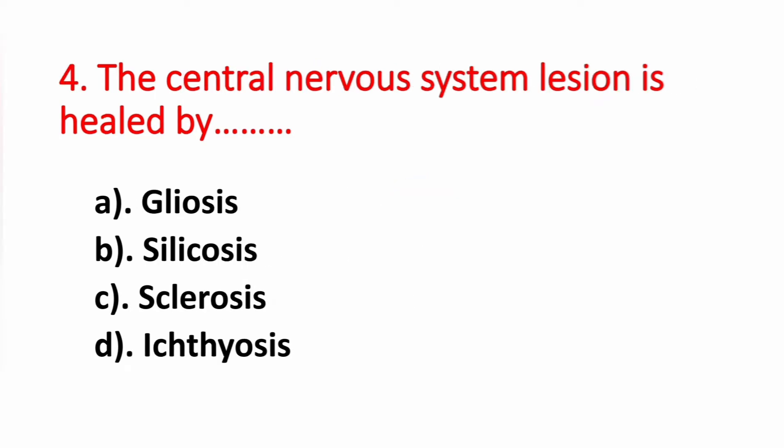Question number 4. The central nervous system lesion is healed by? Option A: Gliosis. Option B: Silicosis. Option C: Sclerosis. Option D: Ichthyosis. The answer is Option A, Gliosis.